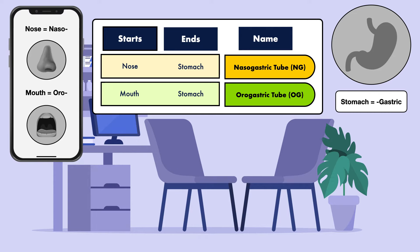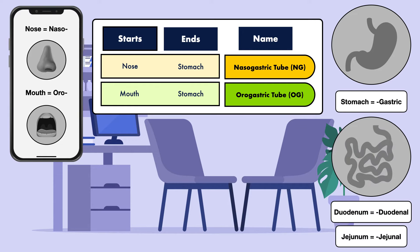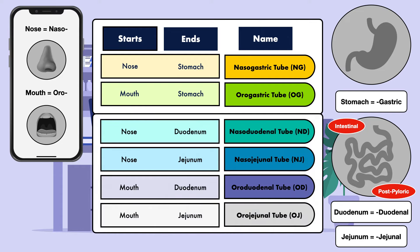Short-term feeding tubes can also be guided into the small intestine. These may be labeled as intestinal or post-pyloric, but usually the name is more specific to the section of the small intestine they end in. If the tube ends in the duodenum, it is a duodenal tube, and if the tube ends in the jejunum, it is a jejunal tube. So if the tube is inserted through the nose and ends in the duodenum, it is a nasoduodenal tube, or ND tube. And if the tube is inserted through the nose and ends in the jejunum, it is a nasojejunal tube, or NJ tube. The same concept can be applied to a tube inserted through the mouth. The end of feeding tubes are never positioned in the ileum or colon because it is beyond where most nutrients are absorbed.